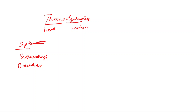Systems can be classified as open systems, closed systems, or isolated systems. An open system allows both mass and energy to cross the boundary. A closed system allows only energy to flow through the boundary. An isolated system never allows energy or mass to pass through the boundary.